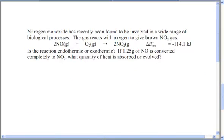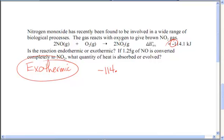Now let's see just a straight up enthalpy problem. Not Hess's law whatsoever. This one involves grams. So it says, is this reaction endothermic or exothermic? Well, again, the delta H is negative. Negative implies a loss. So it is exothermic. If 1.25 grams of NO is converted completely to NO2, what quantity of heat is absorbed or evolved? Now remember that enthalpy is a ratio.